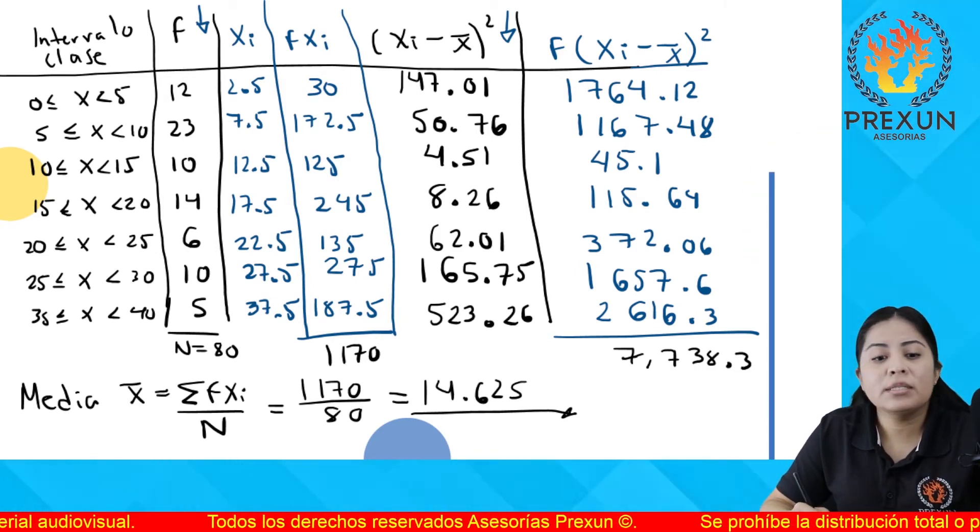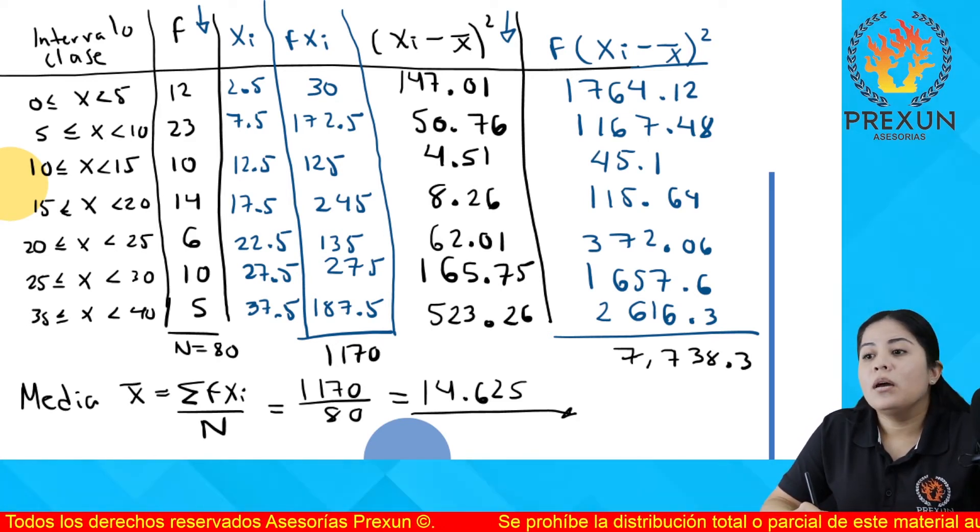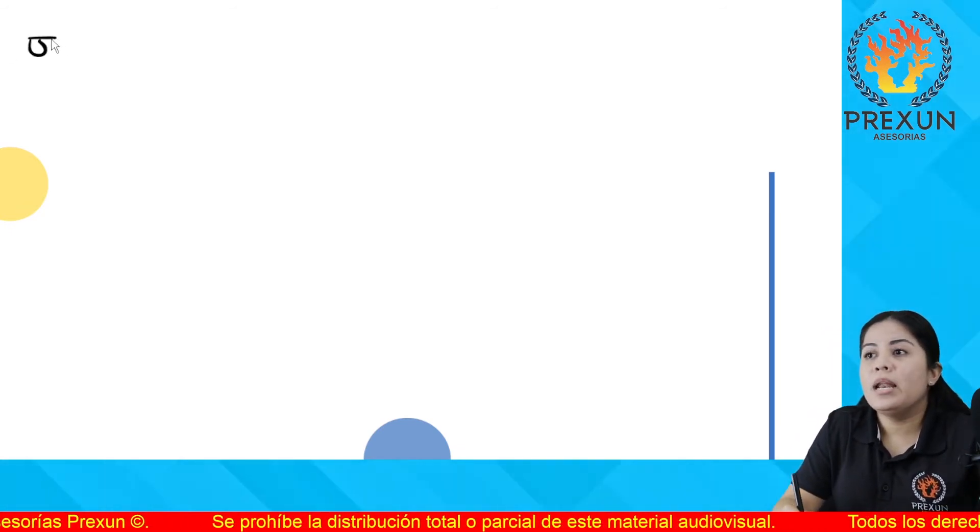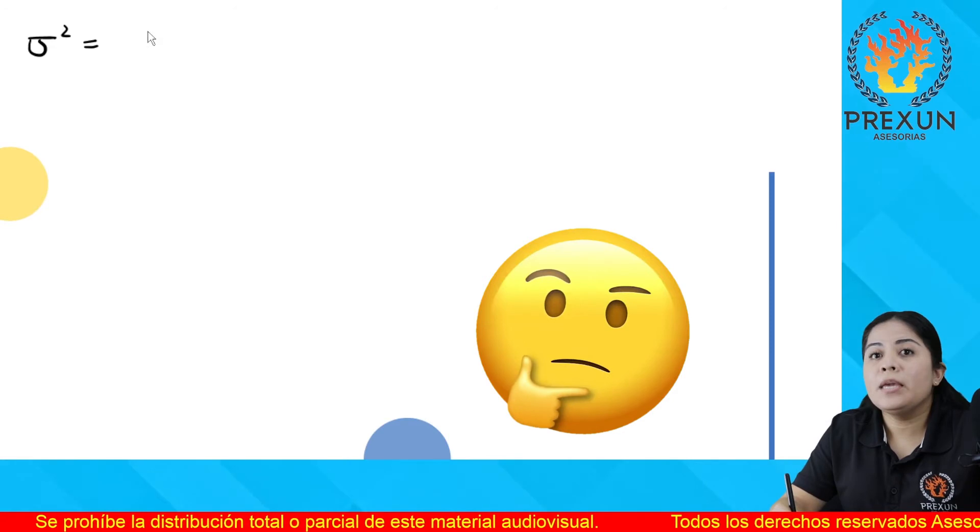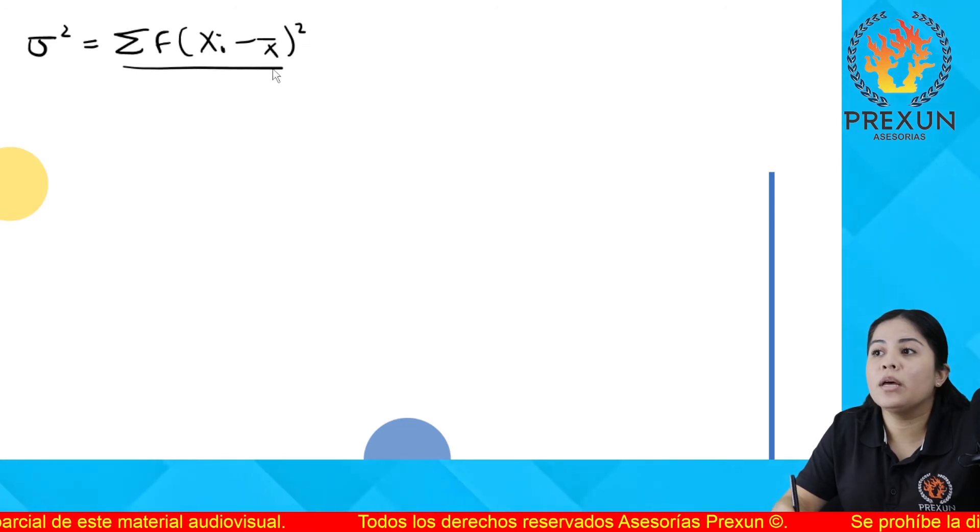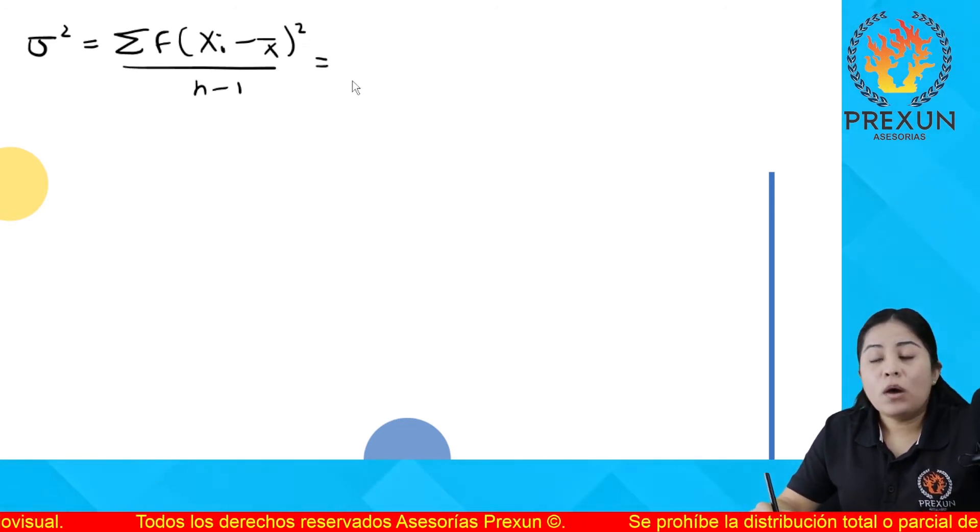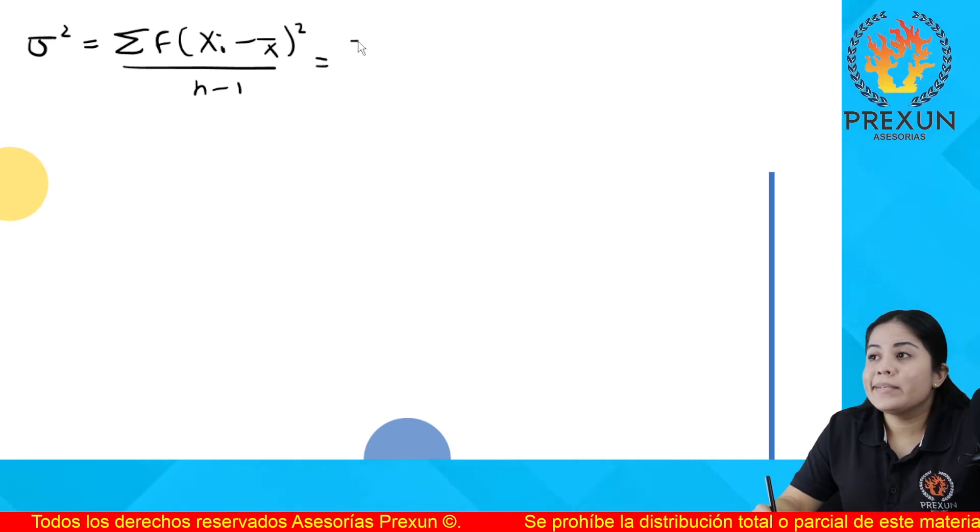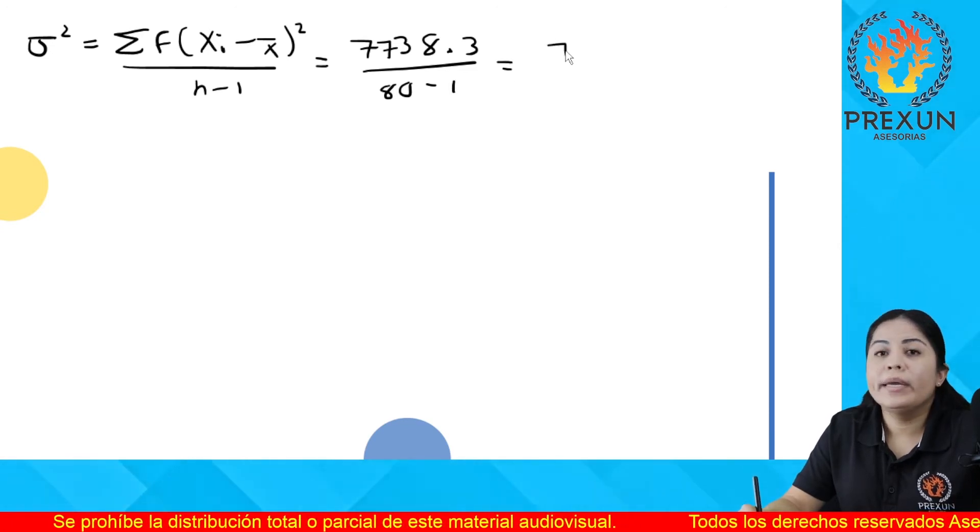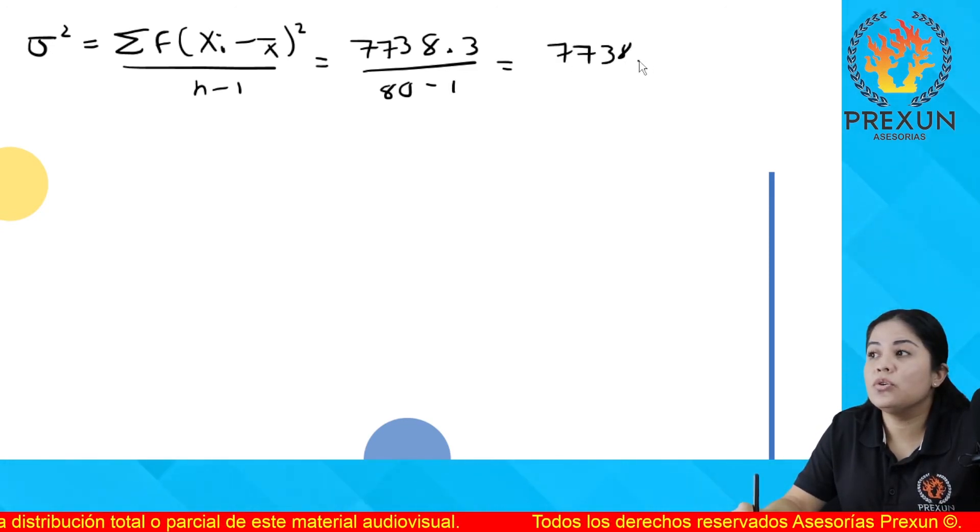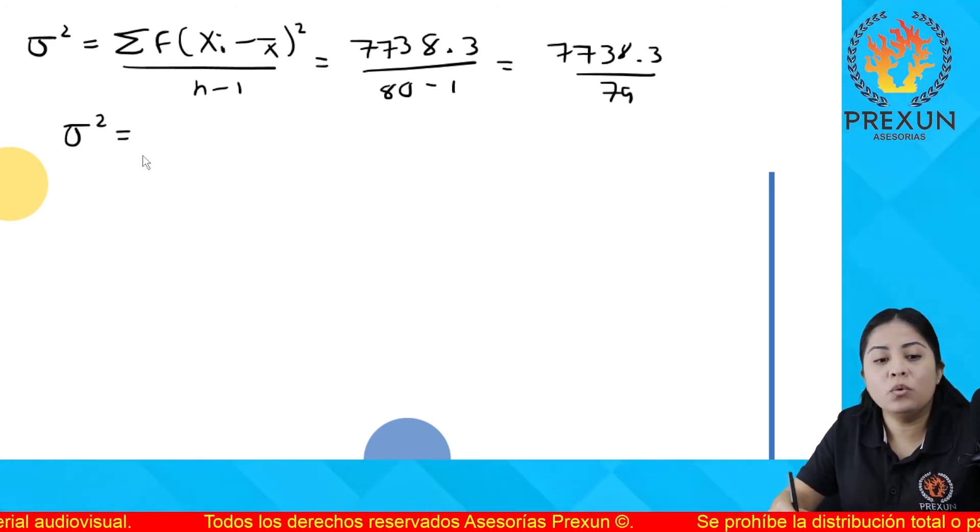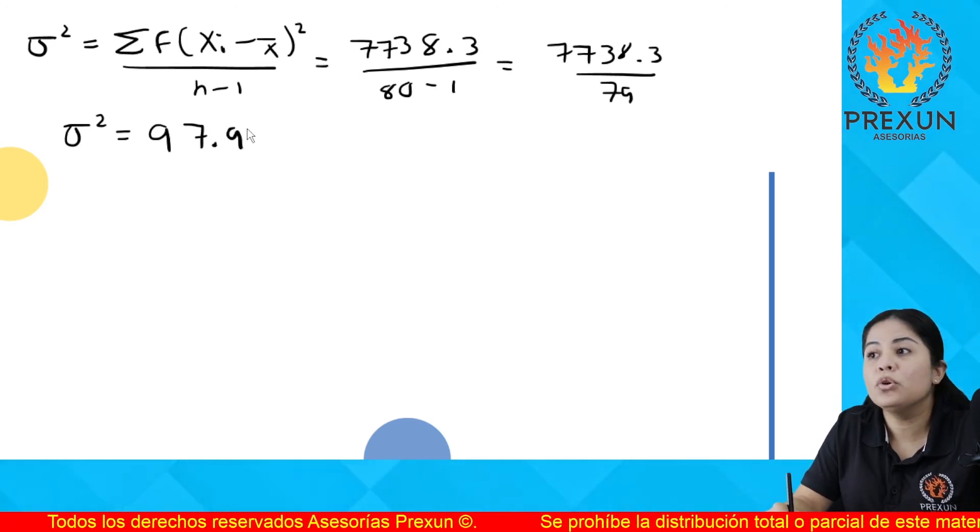Vamos a continuar. Ya tenemos el concepto de la media. Ahora, vamos a determinar el concepto de la varianza. La varianza la representamos con este símbolo e implica la sumatoria de F por X sub Y menos la media al cuadrado sobre N-1. El resultado que obtuvimos en la sumatoria es de 7,738.3 entre 80-1. Es 7,738.3 entre 79. La varianza es un resultado de 97.95.